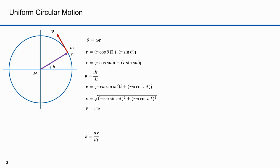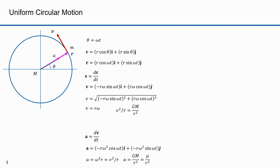The derivative of velocity is acceleration. Taking the derivative and computing the magnitude gives a equals omega squared r, which equals v squared over r. Acceleration also equals GM over r squared, or mu over r squared. If v squared over r equals mu over r squared, then v squared equals GM over r, which equals mu over r. Hence, v equals the square root of GM over r, or the square root of mu over r.